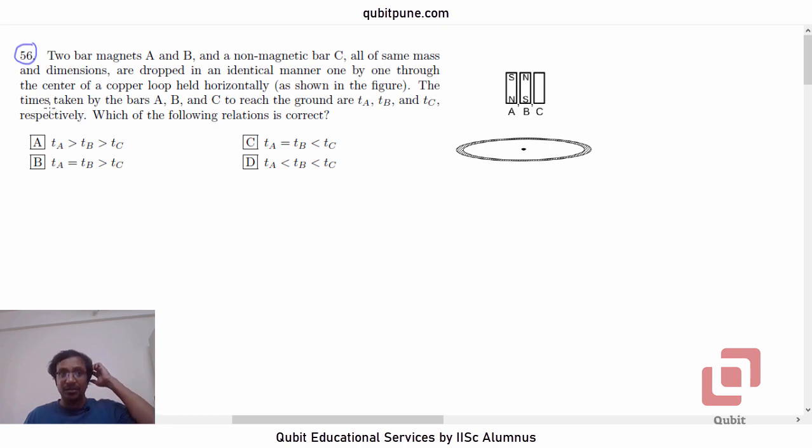This question is based on the concept of electromagnetic induction and Lenz's law. Two bar magnets A and B and a non-magnetic bar C, all of same mass and dimensions, are dropped in an identical manner, one by one, through the center of a copper loop held horizontally as shown in the figure.